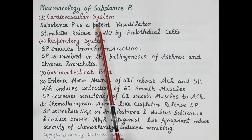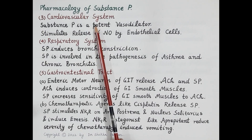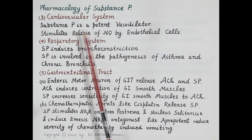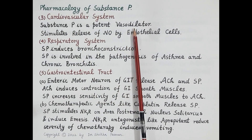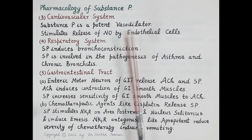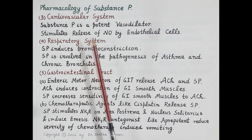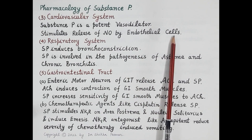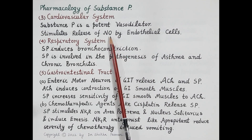Regarding the effect of substance P on the cardiovascular system: substance P is a potent vasodilator — it dilates blood vessels and increases their diameter. As seen during neurogenic inflammation, substance P induces release of nitric oxide by endothelial cells, and this nitric oxide produces vasodilation.